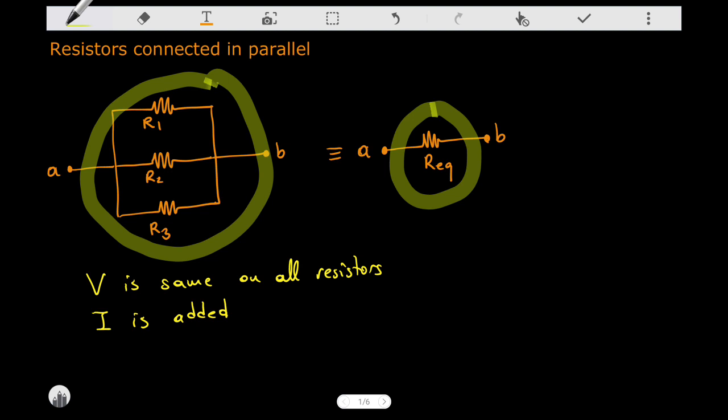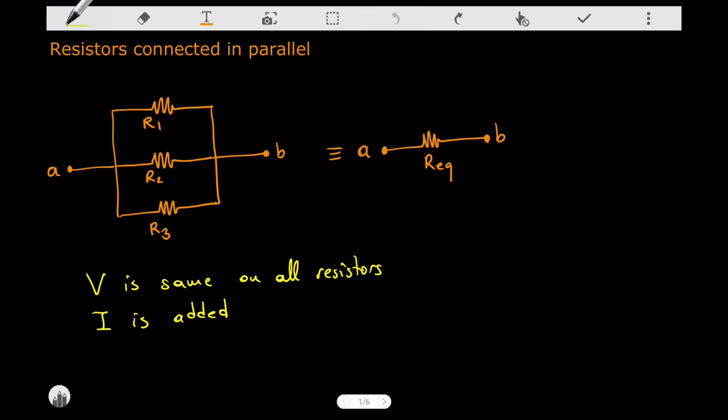When does the rest of the circuit behave in the same way? This happens when it sees the same potential drop between the points A and B and the same current flowing from A to B. If these conditions are satisfied, it doesn't matter what is there between these two points.